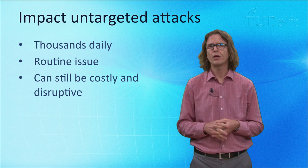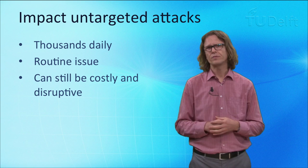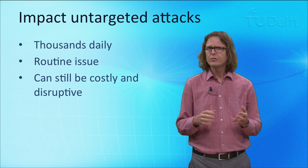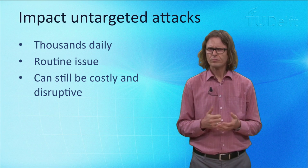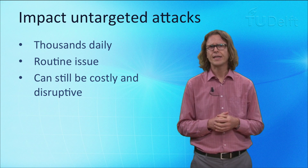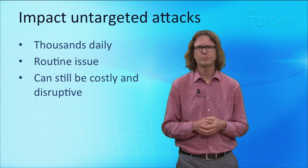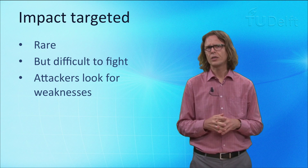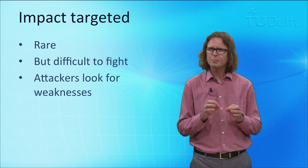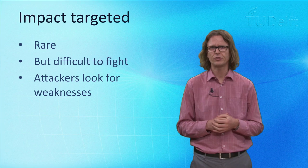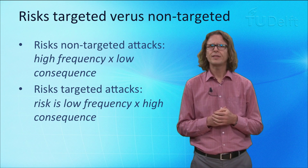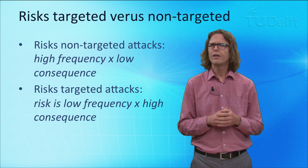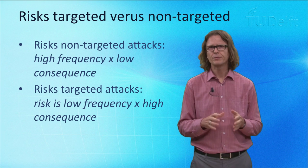Even though an attack is not targeted specifically at the systems in a certain infrastructure, it can still wreak havoc there. And there are many such attacks flowing across the internet all the time. Thousands of non-targeted attacks hit the systems of infrastructure operators every day. Untargeted attacks are a routine issue. In many respects, so are the defenses — standard security practices deal with most of this. Targeted attacks are the mirror image: more rare, but also harder to defend against, because attackers can exploit specific weaknesses in the targeted systems. Crudely put, the risk of a non-targeted attack is high frequency times low consequence, while for a targeted attack the risk is low frequency times high consequence.